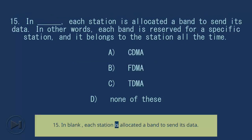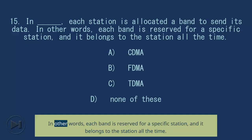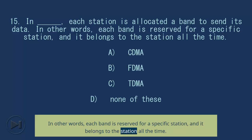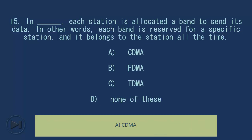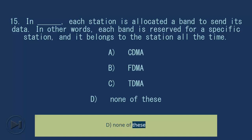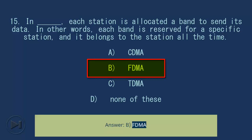Question 15: In blank, each station is allocated a band to send its data. Each band is reserved for a specific station and belongs to that station all the time. A) CDMA, B) FDMA, C) TDMA, D) None of these. Answer: B) FDMA.